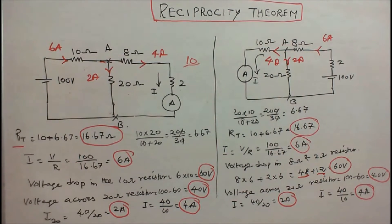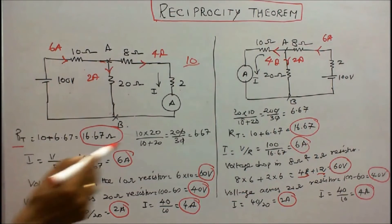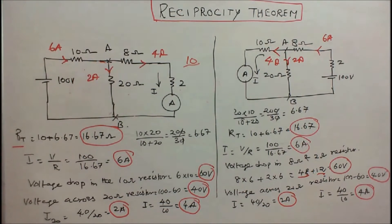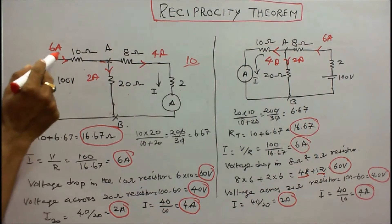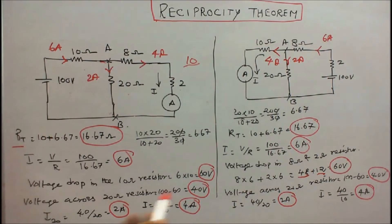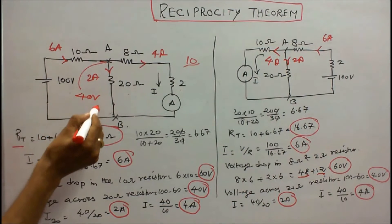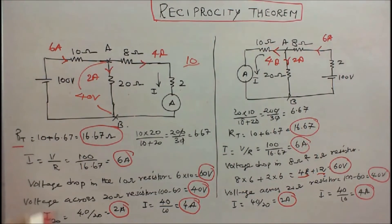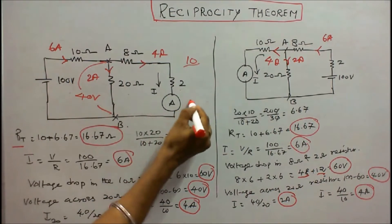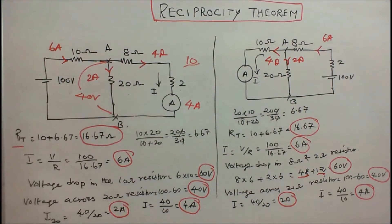Now we can find the total current: I equals V by R, which is 100 divided by 16.67, equal to 6 amps. Current towards junction A is 6 amps. The voltage drop across the 10 ohm resistor is 6 into 10, equal to 60 volts. Therefore, the voltage across AB is 100 minus 60, equal to 40 volts. The current in the 20 ohm resistor is 40 by 20, equal to 2 amps. The current in the 10 ohm resistor (8 plus 2 series branch) is 40 by 10, equal to 4 amps. So the ammeter reading is 4 amps. Current towards junction A is 6; current leaving junction A is 2 plus 4, equal to 6.